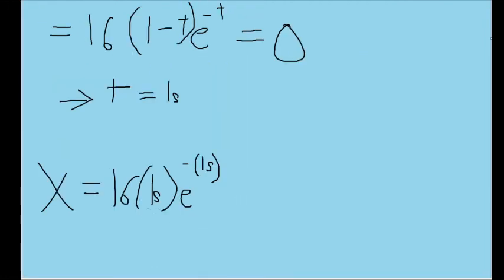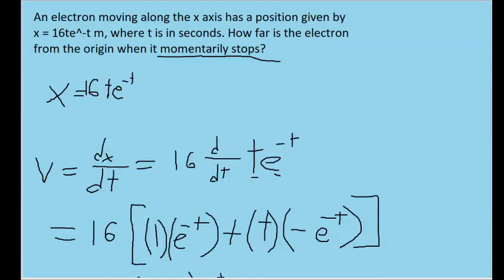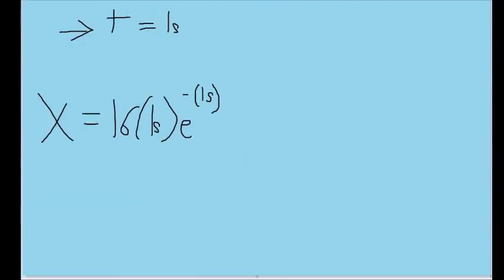So here I have taken one second and put that in for the original formula the problem gave us for the position, and plugging this into our calculator, we can see that this is equal to 5.9 meters, meaning that the electron will be 5.9 meters away from the origin at the point in time when it briefly stops.